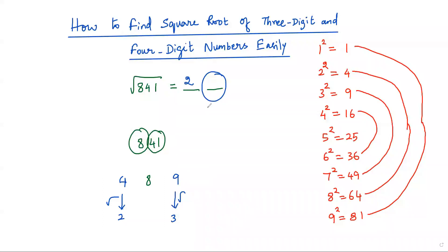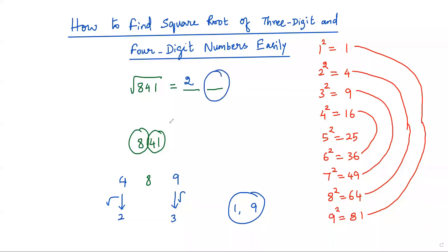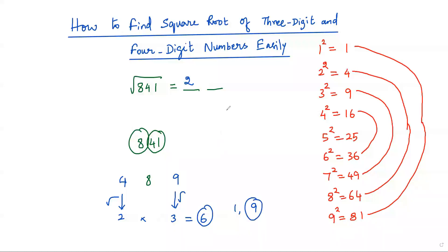To get the second digit, I consider the ones place digit in the second group 41, which is 1. Since 1² and 9² both have 1 at the ones place, the candidates are 1 and 9. Multiplying the square roots 2 × 3 = 6. This product 6 is less than the first-group number 8, so we choose the larger candidate: 9. Therefore √841 = 29.